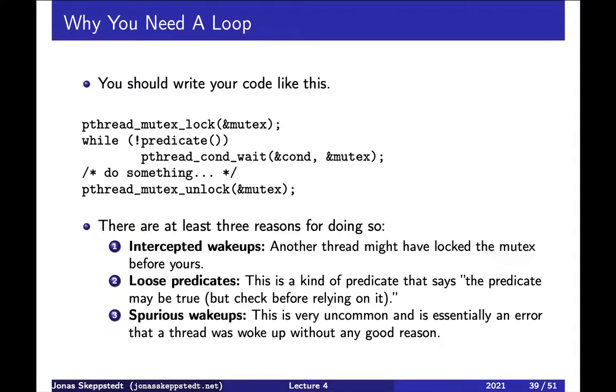And then there can be something called a loose predicate, which means that the predicate indicates that something may be true, but we have to check that it really is true before we rely on it. This may not be the most useful thing, but it occurs.